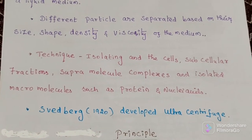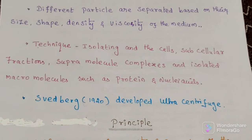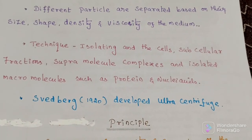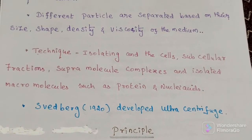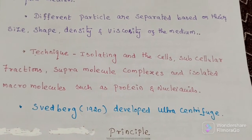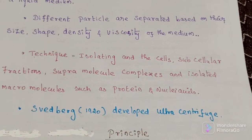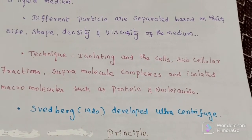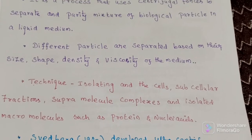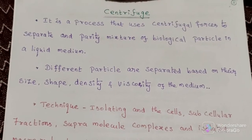In centrifuge, different types of gradient materials are used: sucrose, silica gel, glycerol, calcium chloride, folic acid, etc. So this is the introduction — it is a simple machine used to separate different types of particles based on size, shape, density, and viscosity. Svedberg developed the ultracentrifuge in 1920.